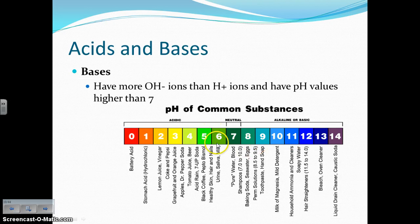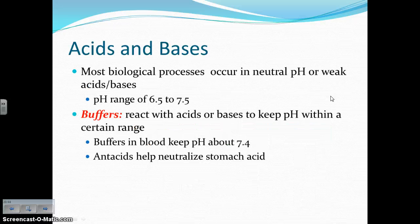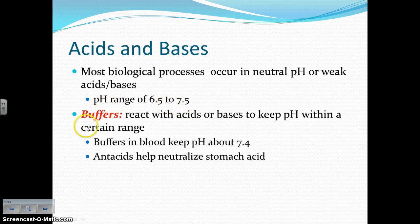Don't get confused — actual milk is slightly acidic, which is a common misconception. Most biological processes occur in the neutral to weak acid/base range of about 6.5 to 7.5. Buffers react with acids or bases to keep pH within a certain range. For example, buffers in our blood keep its pH around 7.4, which is needed for blood to travel throughout the body.